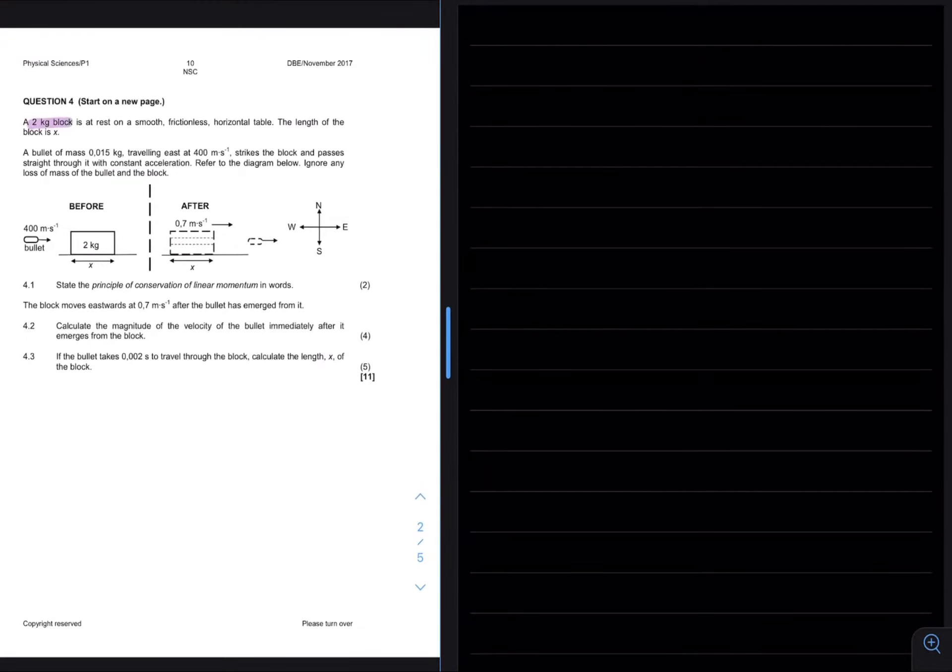A 2kg block is at rest on a smooth frictionless horizontal table. The length of the block is x. A bullet of mass 0.015kg travelling east at 400m per second strikes the block and passes straight through with a constant acceleration. Ignore any loss of mass of the bullet and the block.